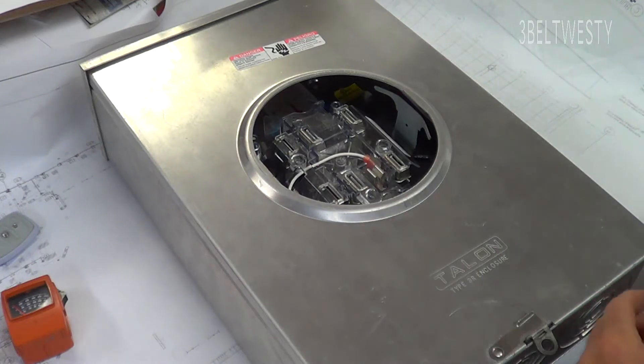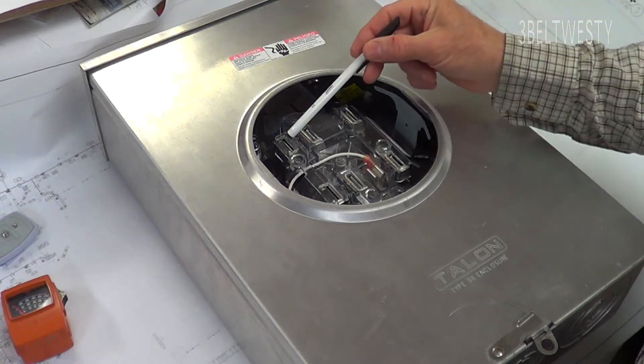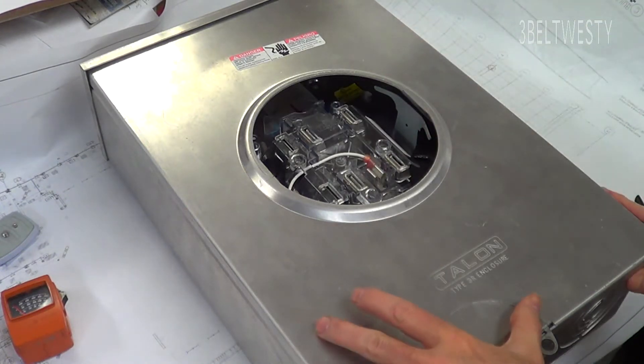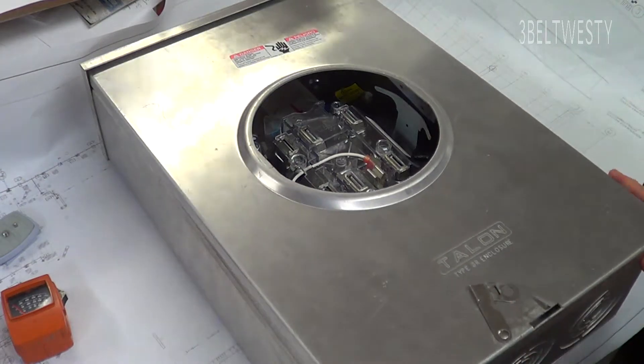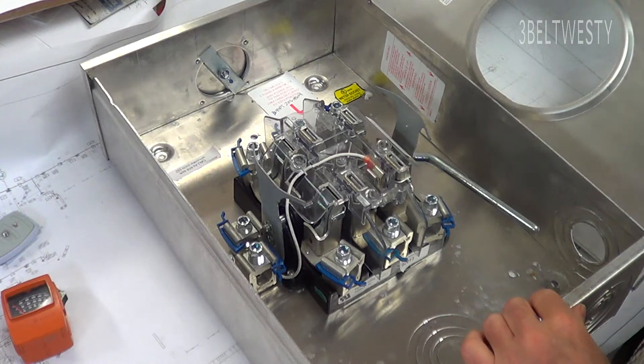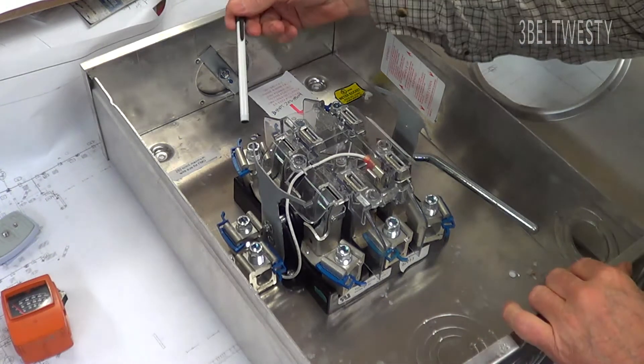Okay, this is a three-phase meter socket, what you call a seven jaw - one, two, three, four, five, six, seven jaws. I'll open it up and show you what's inside of it. This is for three-phase power.